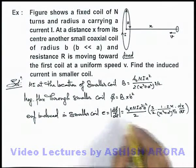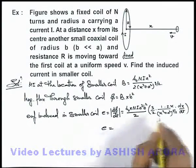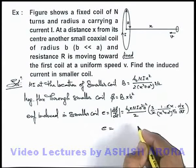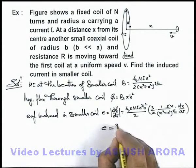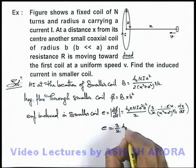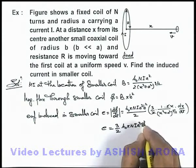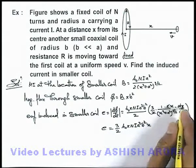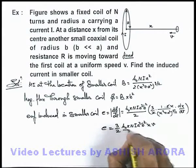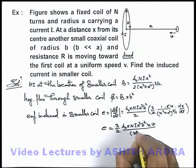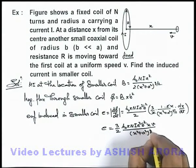Now on simplifying, the value of EMF we are getting is, when 2 gets cancelled out, 3/2·μ₀π·N·I·a²·b²·x·v divided by (x² + a²)^(5/2), where dx/dt we can write as v.